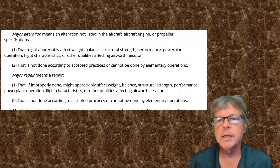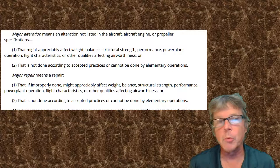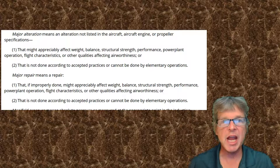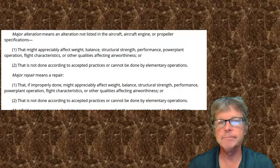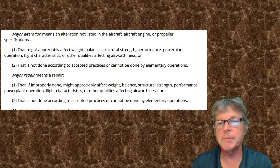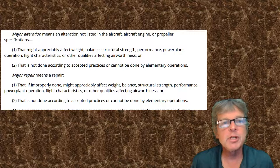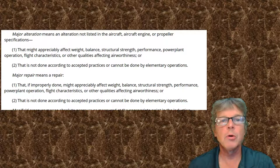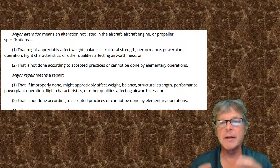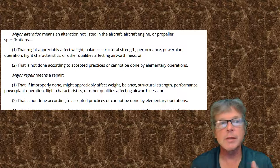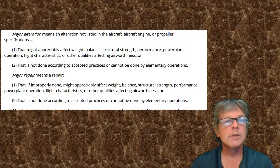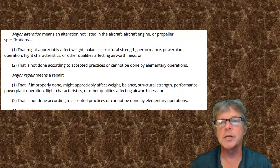The definition in FAR Part 1 is that a major alteration is a change — an alteration not listed in the specifications or the type certificate data sheet. It's a new change, something that hasn't been done before, something that has not been approved, that might appreciably affect weight and balance, structural strength, performance, power plant operation, flight characteristics, or other airworthiness qualities. The second criteria is that it is not done according to accepted practices or cannot be done by elementary operations — so it's something complex.